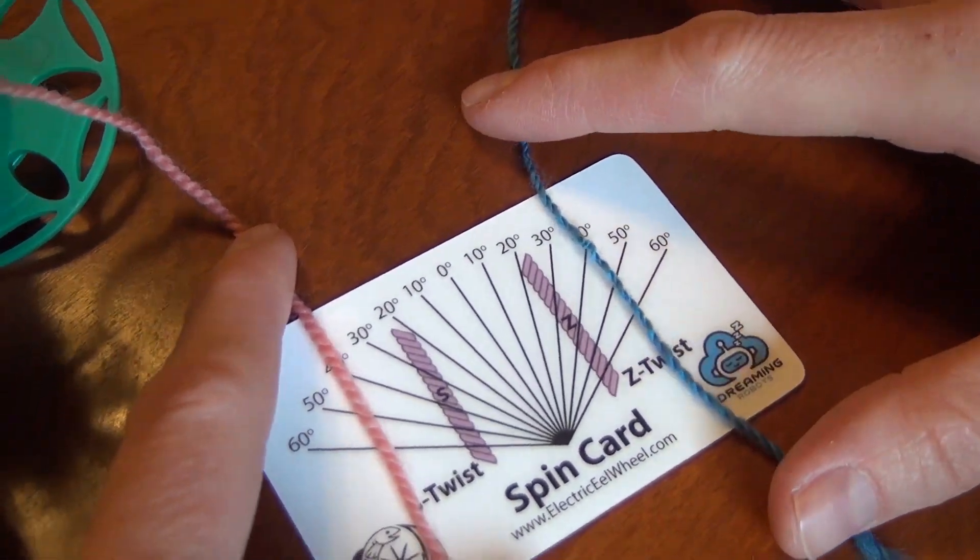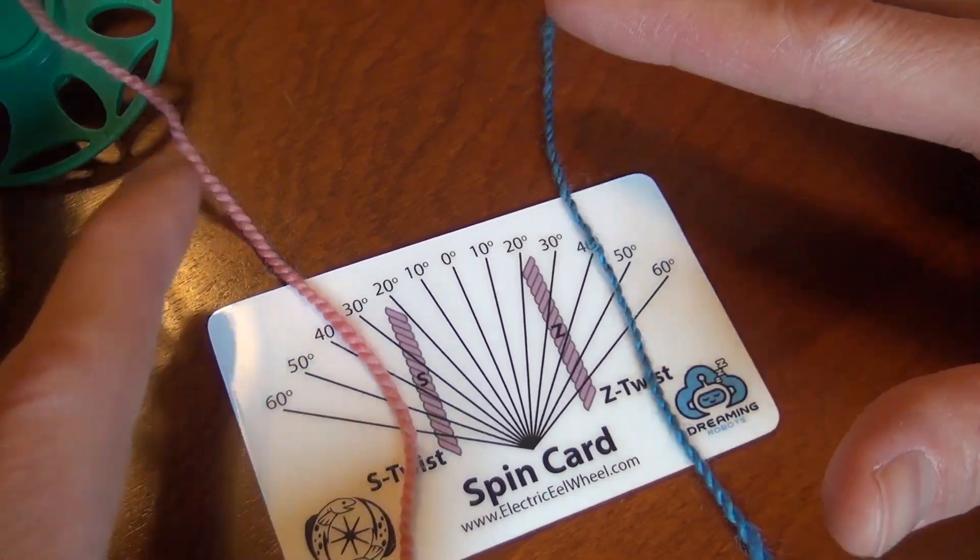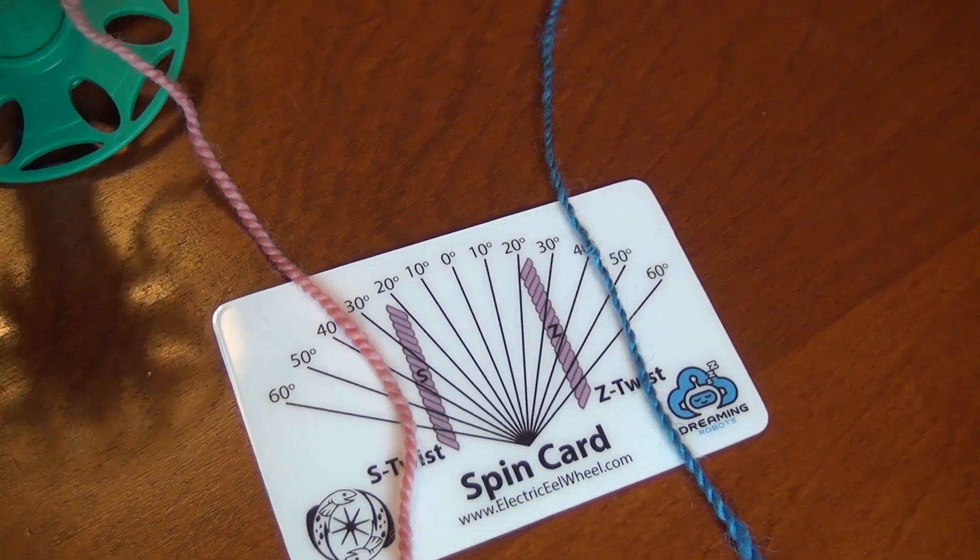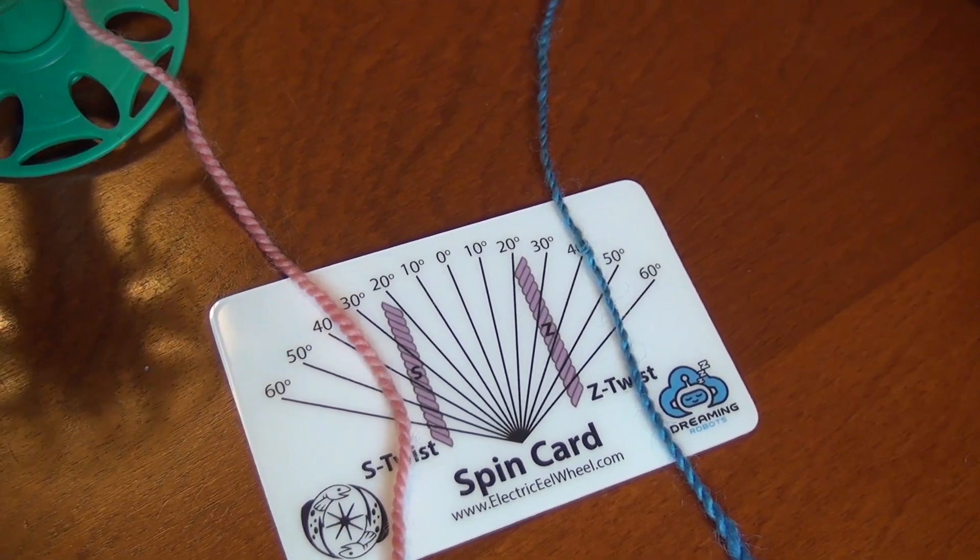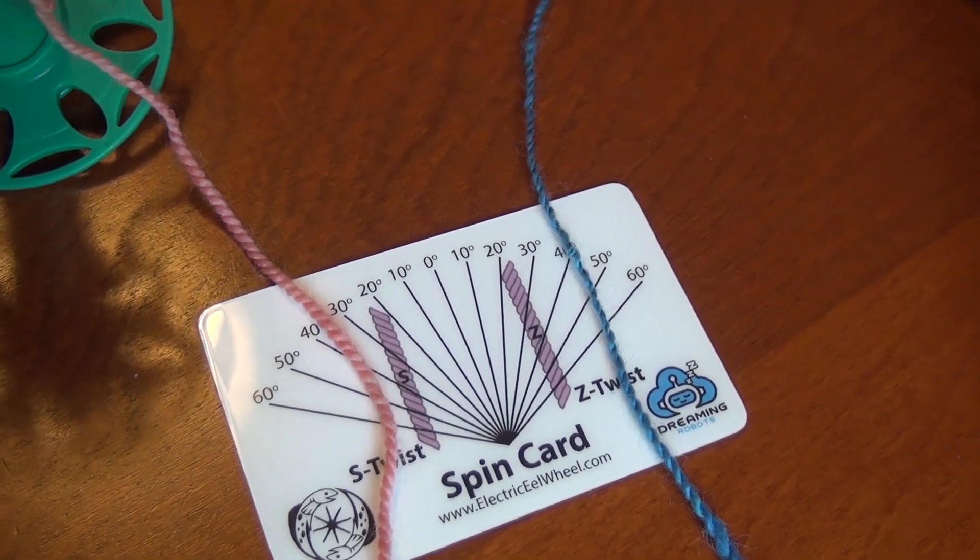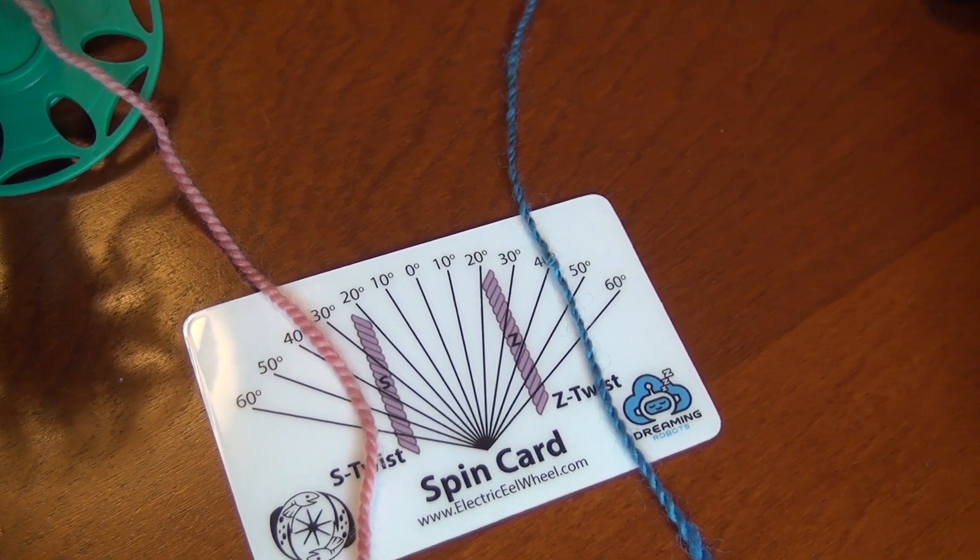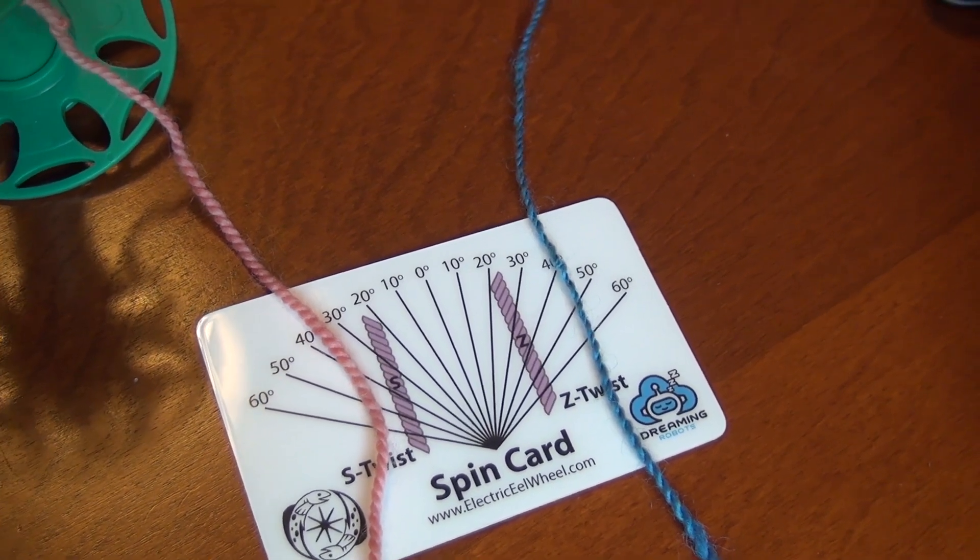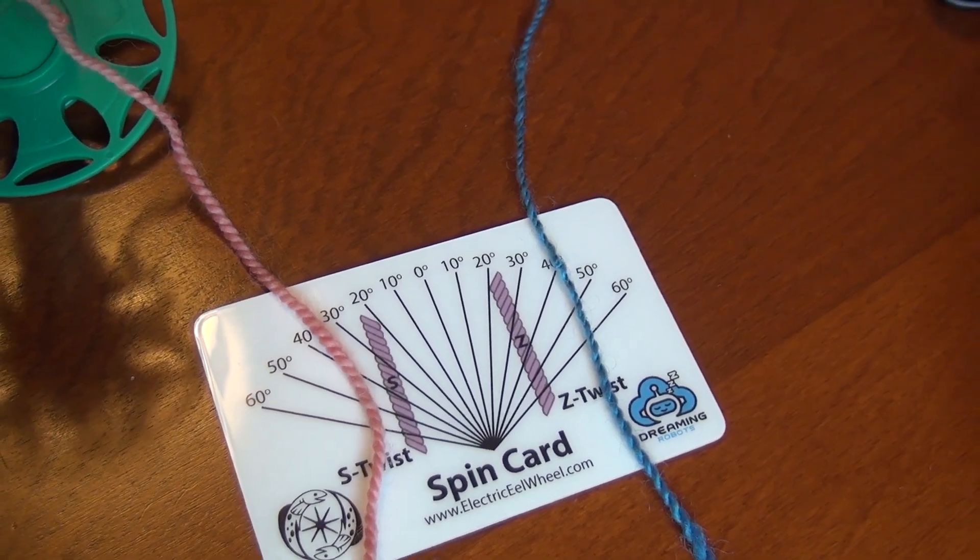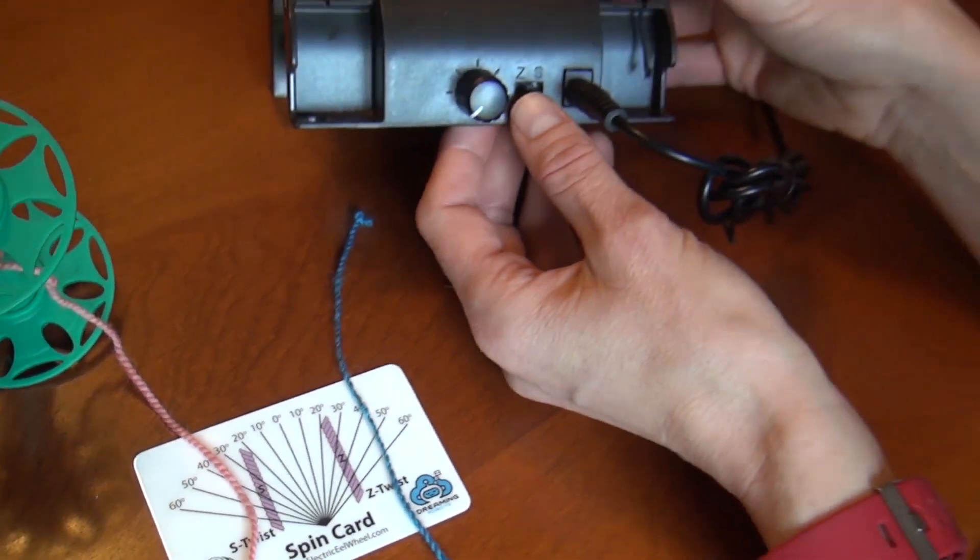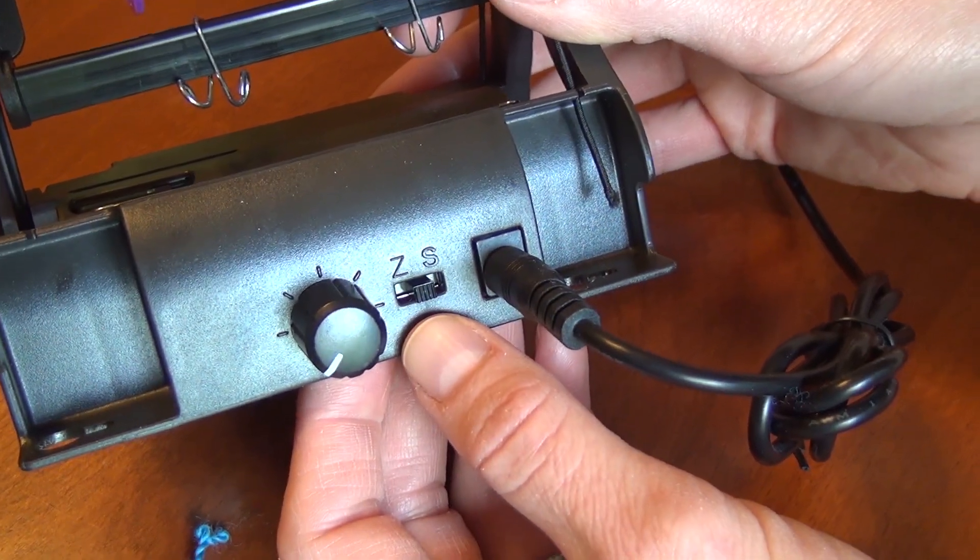The reason these twists are important is because when combining multiple single strands together in a process called plying, you need to set the twist to the opposite of whatever twist was used when spinning the singles. If you don't use the opposite twist then when you try to ply the singles together it just won't work. What we generally do is use Z twist for all the singles and S twist when plying. If you do this then the singles and plying will always just work.